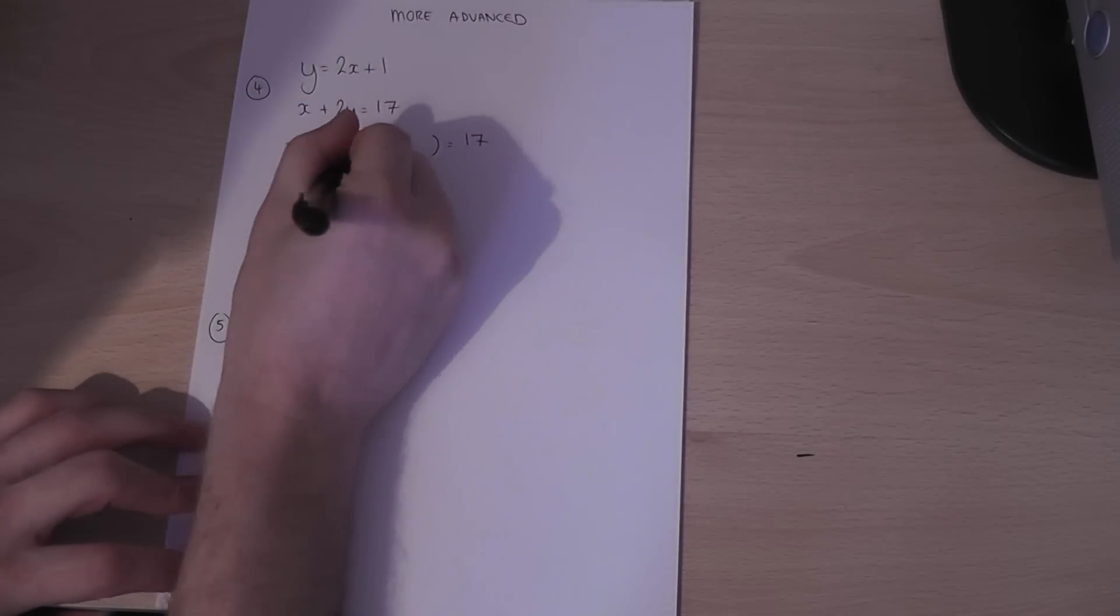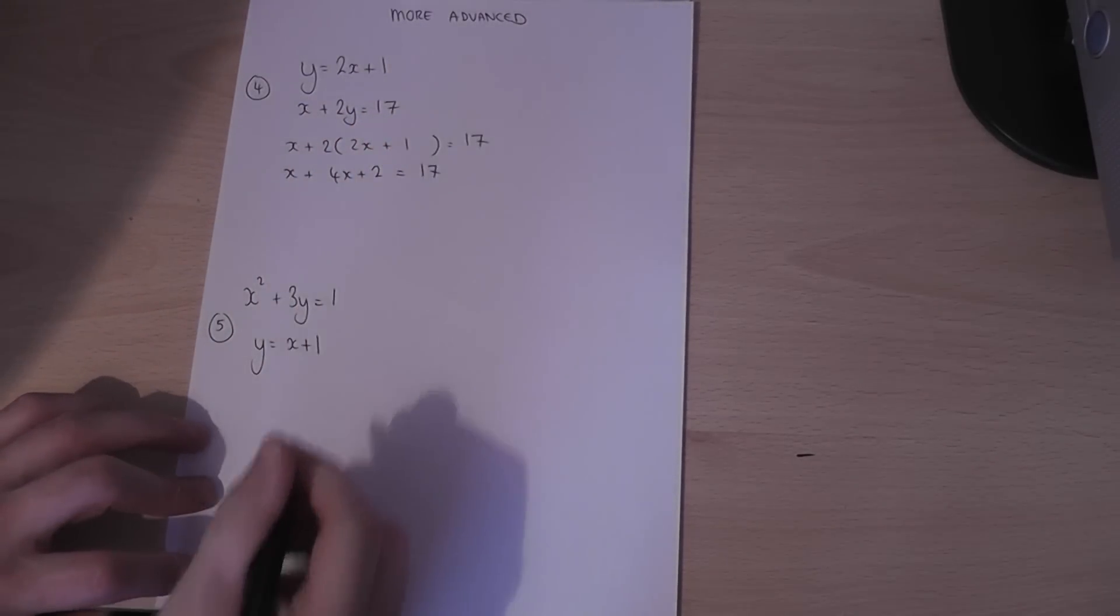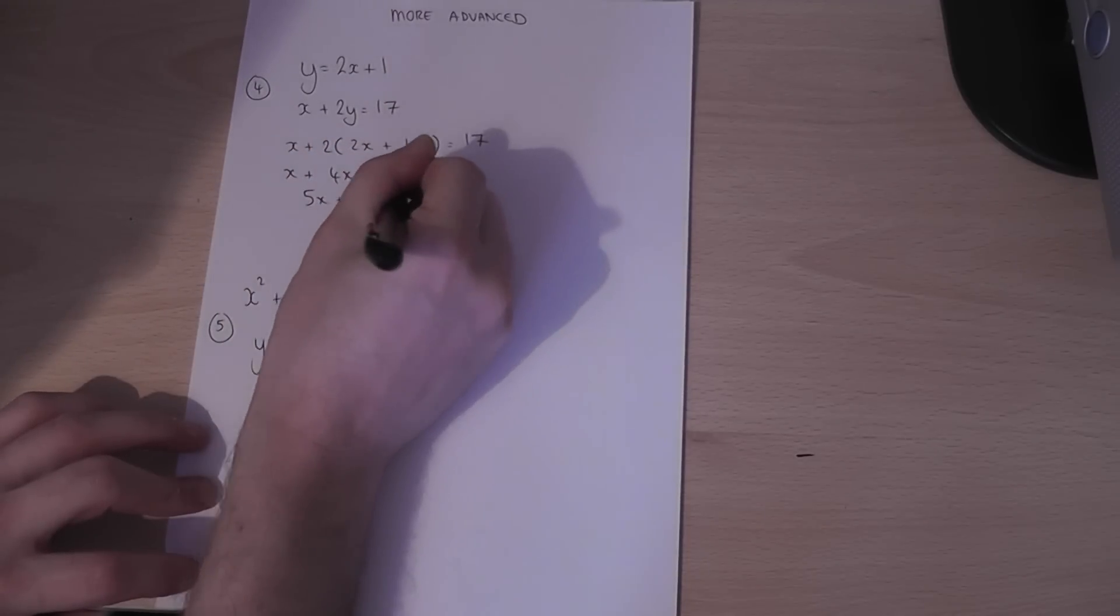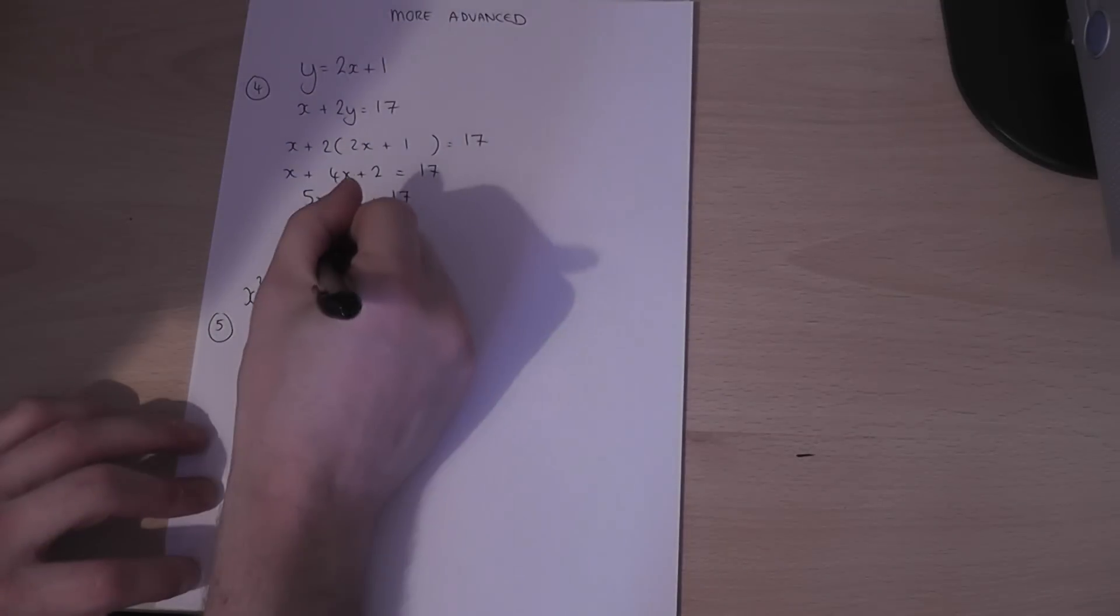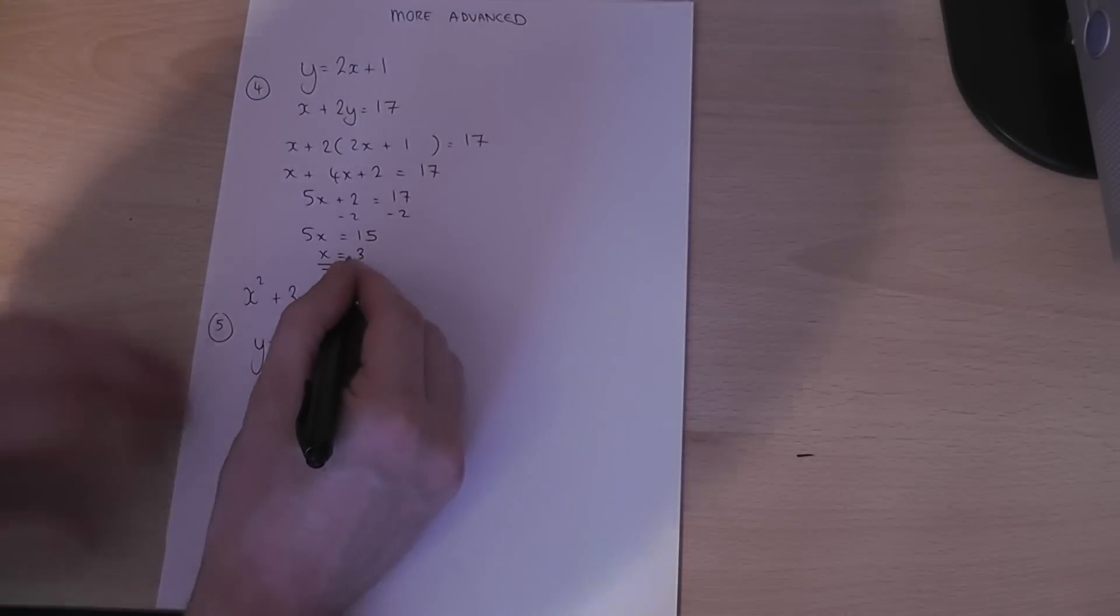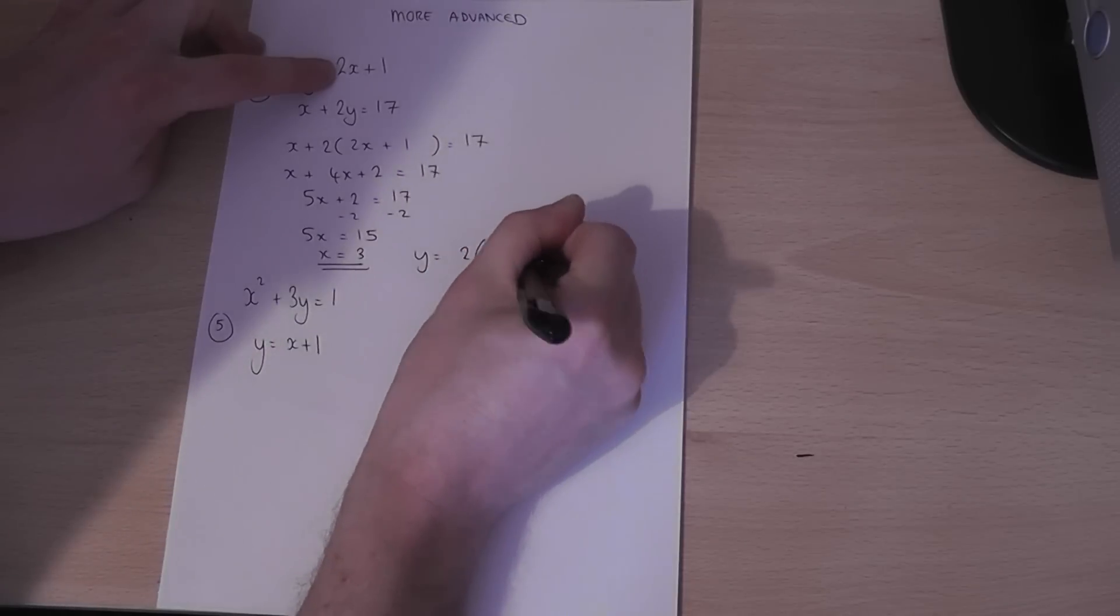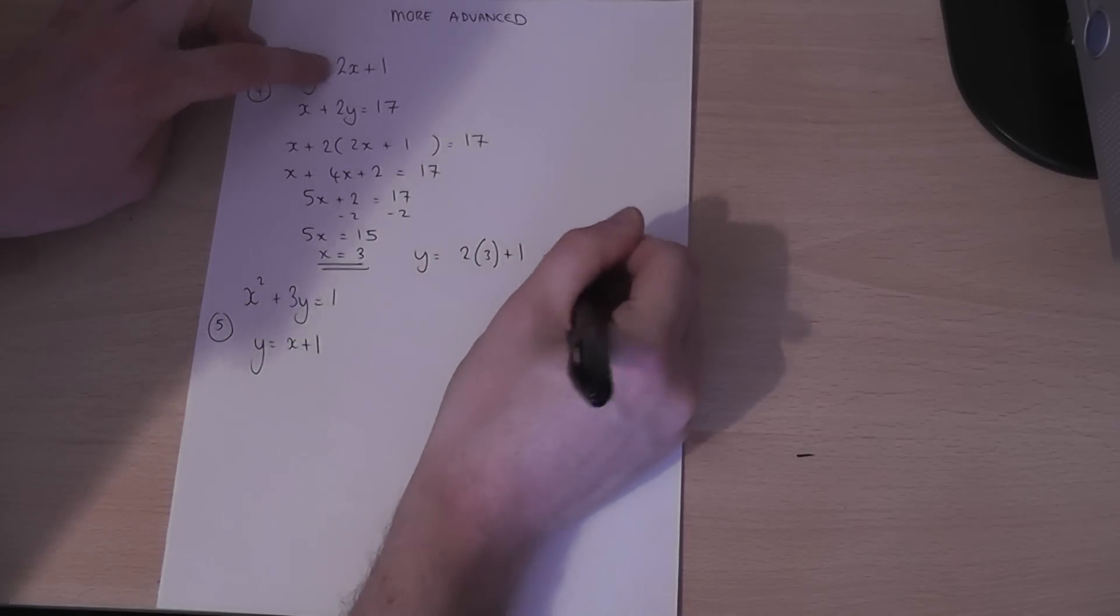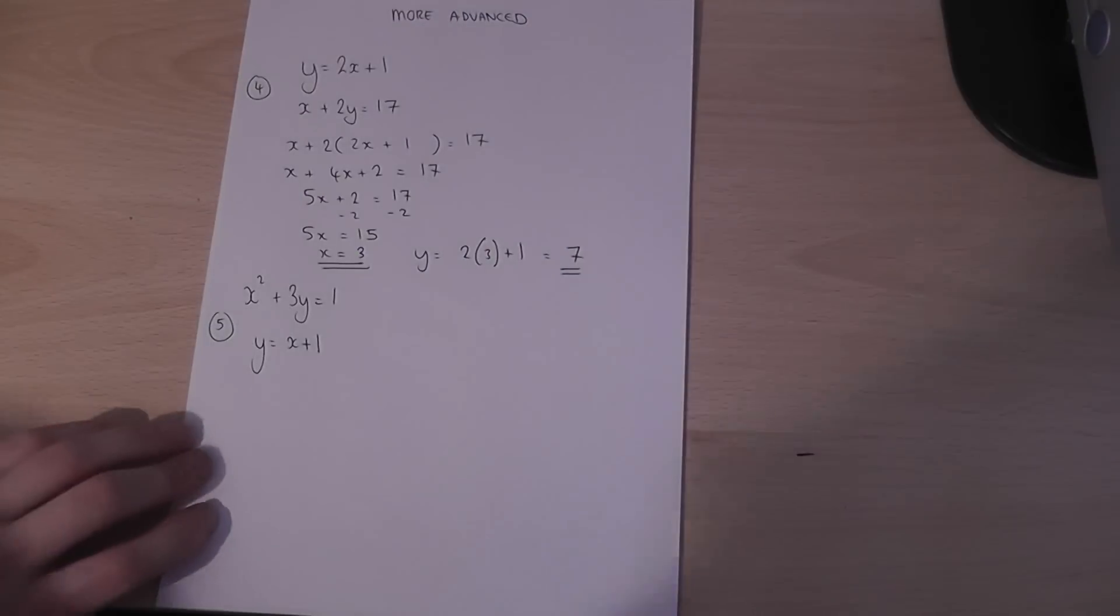And then expand the bracket. Simplify. Subtract 2 from both sides. Therefore x must equal 3. And then for the easy part, if x equals 3, y must equal 2 lots of 3 plus 1 which equals 7. And these are the solutions to this pair of simultaneous equations.